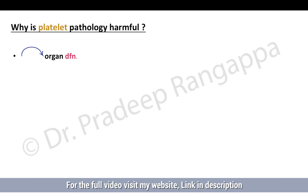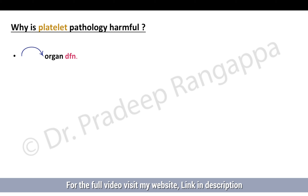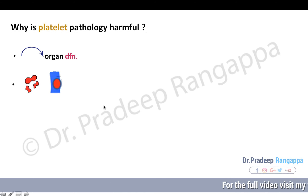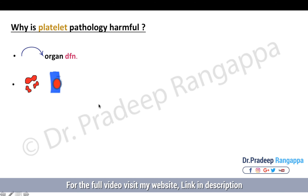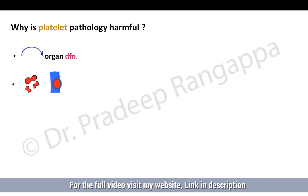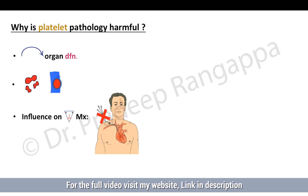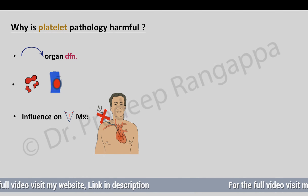Why is platelet pathology harmful? Because platelets have a direct effect on organ dysfunction — when there is a platelet abnormality, it can lead to organ dysfunction and bleeding. As mentioned, thrombocytopenia can lead to bleeding. Thrombocytopenia can also be associated with a pro-thrombotic phase, as seen in ITP or TTP — mainly TTP and HUS — where there is a pro-thrombotic state in the presence of thrombocytopenia.